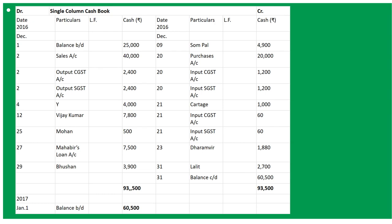On 25th, received money order from Mohan, rupees 500. Money order means received cash. Whenever we receive cash from Mohan, cash account is debited to Mohan's account. So 'To Mohan's Account' 500. On 27th, borrowed from Mohan rupees 7,500 - 'To Mohan's Account' 7,500. Borrowed means it is received, so include on the debit side.